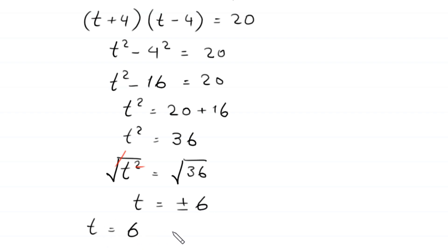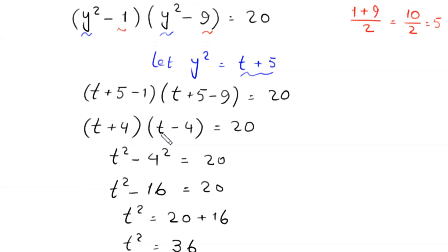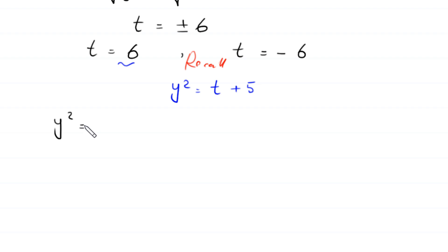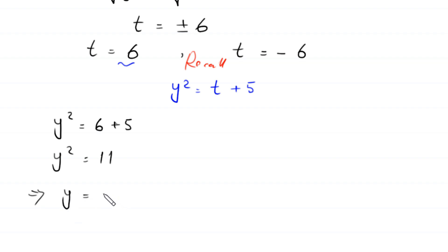Recall that y squared equals t plus 5. When t equals 6, y squared equals 6 plus 5, so y squared equals 11. Taking the square root of both sides, y equals plus or minus square root of 11.